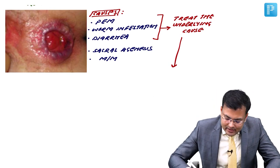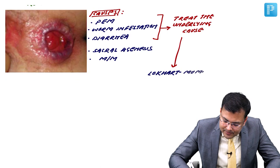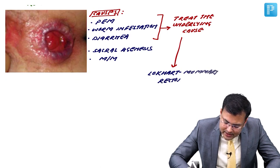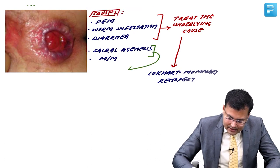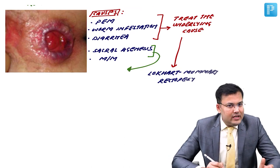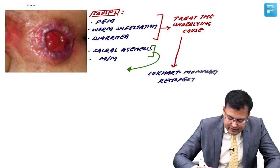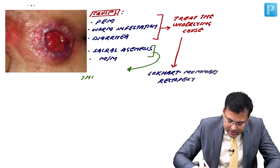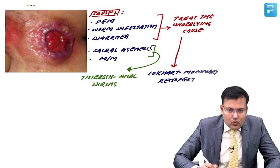The name of rectopexy for children is Lockhart-Mummery rectopexy. For patients having sacral agenesis or meningomyelocele, the prognosis is poor and patients cannot tolerate long duration surgery, so here we go for Thiersch anal wiring.